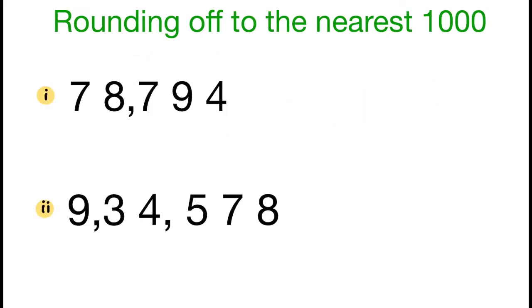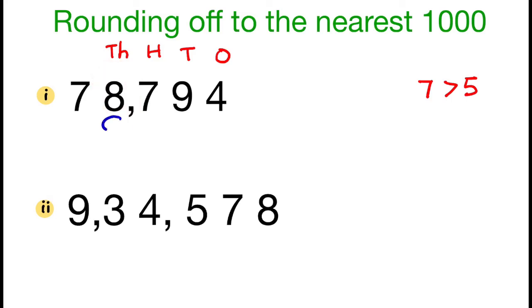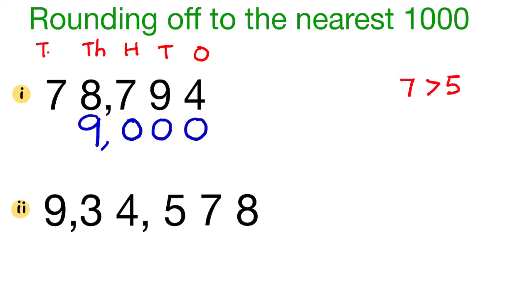Next number: 78,794. The hundreds place digit is 7, which is greater than 5. So, we add 1 to the digit 8 in the thousands place. 8 plus 1 is 9. We write 0 in the ones, tens and hundreds place. We write 7 in the ten-thousands place as there is no change. The number 78,794 is rounded off to 79,000.